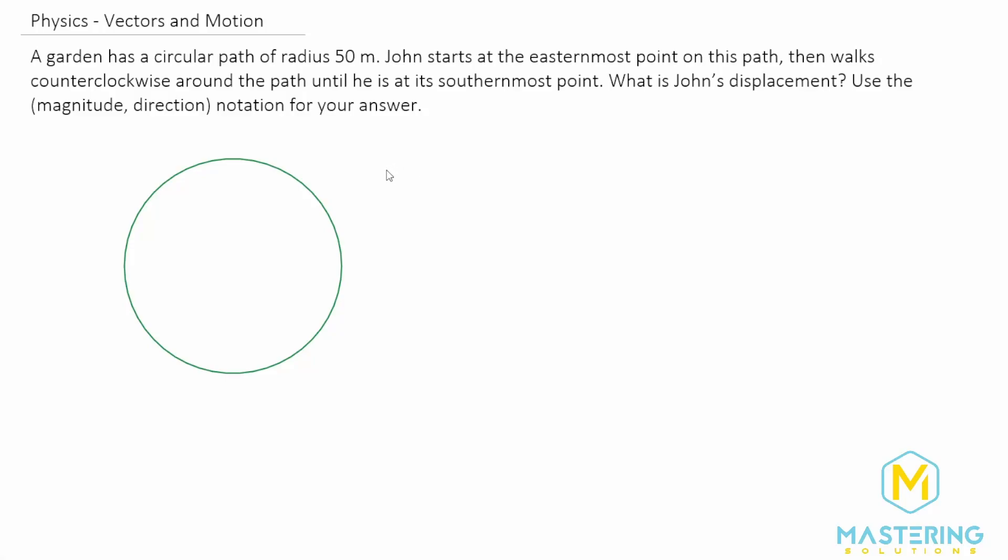Welcome to Mastering Solutions. In this problem they tell us that John is walking along a circular garden path and they say that he starts at the easternmost point.